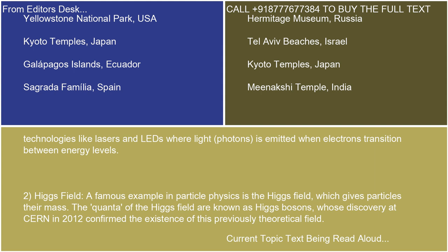A famous example in particle physics is the Higgs field, which gives particles their mass. The quanta of the Higgs field are known as Higgs bosons, whose discovery at CERN in 2012 confirmed the existence of this previously theoretical field.